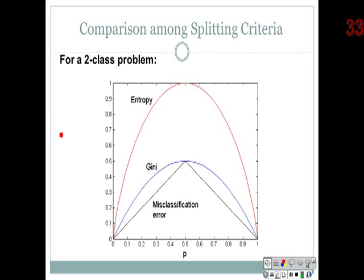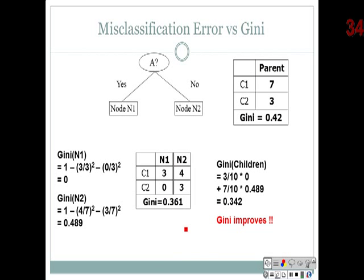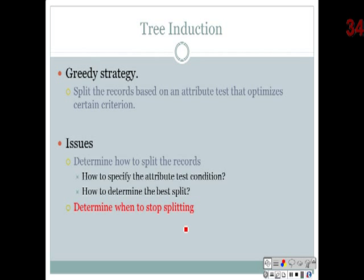Entropy is the most commonly used measure in text mining. Gini is used in other cases; misclassification error is used for numeric data. Some algorithms compute not just one attribute but look at children and merge results to decide which combination gives the best prediction. This is like a random walk over multiple attributes. So the splitting criteria differ, but the goal is the same — find the best split.